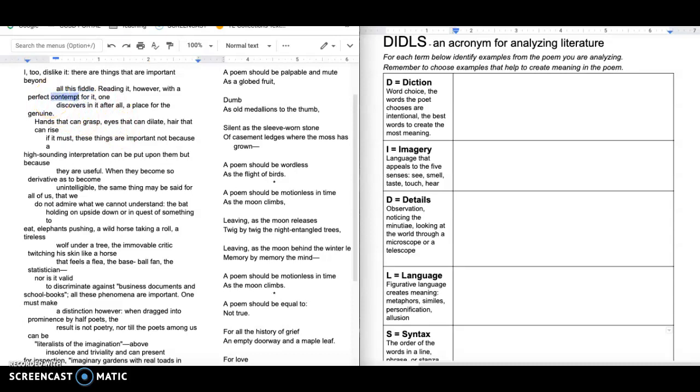So she calls poetry all this fiddle and fiddle is sort of nonsense. So that's a kind of negative word. Contempt, I don't know if you know what contempt means, but it's like disdain or a very strong dislike for something. And so she's saying when reading it, I have a dislike for it and a disdain for it, a contempt for it. So I would say that's a pretty negative word.